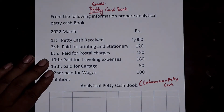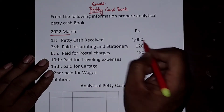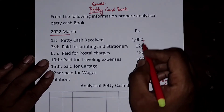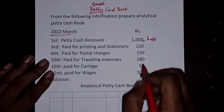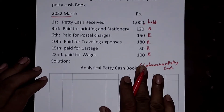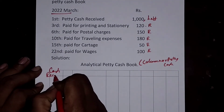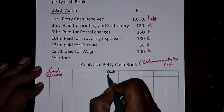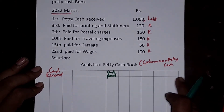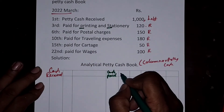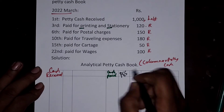From the following information, prepare the analytical petty cash book for March 2022. Petty cash received is Rs. 1,000. In the petty cash book, instead of debit and credit columns, we record cash received on the left-hand side and amounts spent on the right-hand side. Individual expense columns are maintained. The first column is Printing and Stationery.